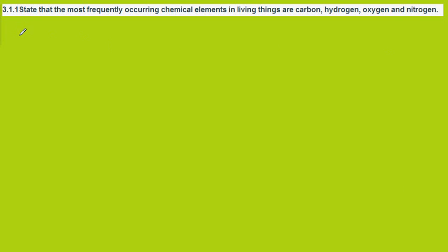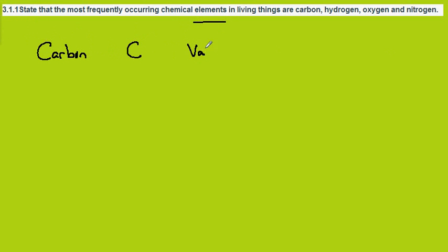Biology Syllabus Statement 3.1.1 - Chemistry of Life. The most frequently occurring chemical elements in living things are, firstly, Carbon, symbol C, with a valency of 4. It seeks to make 4 chemical bonds in molecules.